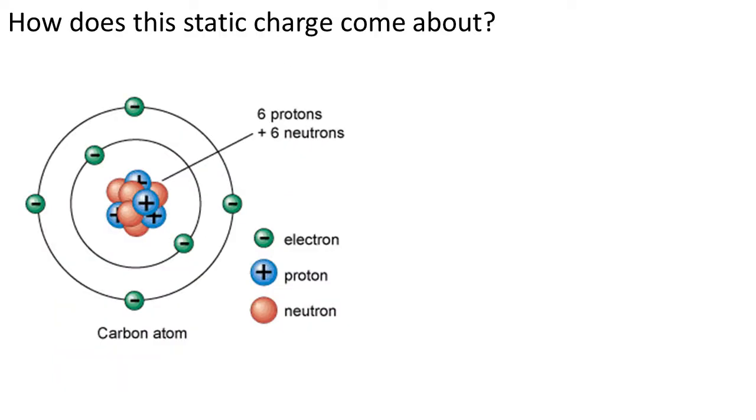So how does this happen? Well, as a bit of revision, you've seen this before. In an atom, the nucleus, the middle part of the atom, is positively charged. And around the outside, you've got these things called electrons, which are negatively charged. When I'm talking about this stuff, I'm using the word electron and the word charge interchangeably. They're the same thing.